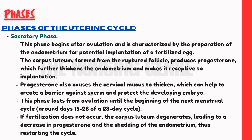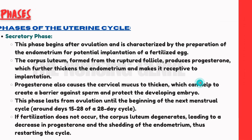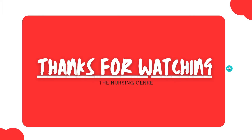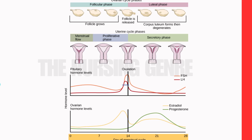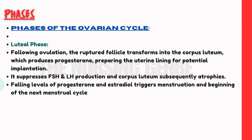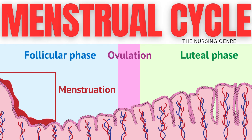If fertilization does not occur, the progesterone hormone decreases, leading to endometrium shedding — that is, menstruation starts. These are the phases of the menstrual cycle. Thanks for watching this video. If you find this video helpful, do like, share, and subscribe to this channel.